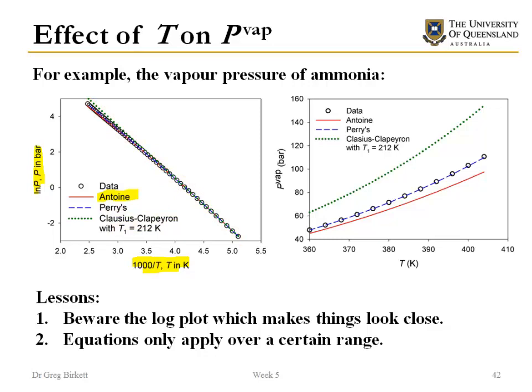Now if we have a look at a linear plot on the right hand side then what we see is we've got the data here with the circles, and so the dotted line is from Perry's and that fits the data very very well. But if we have a look at the Clausius-Clapeyron equation or the Antoine equation we've actually got significant errors in this high pressure region and at this high temperature region, or it's high temperature for ammonia. So what we see from this is that one, don't just look at log plots because log plots can be very misleading and they can make things look very close when they're not. And the second thing is that equations apply over a particular range, always check the range of applicability before you use an equation, particularly in a vapor pressure calculation which is very very important.